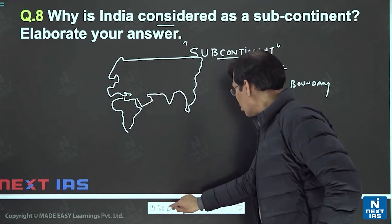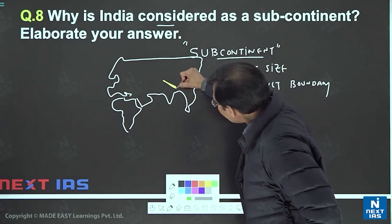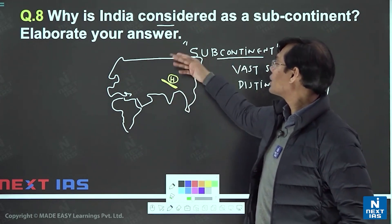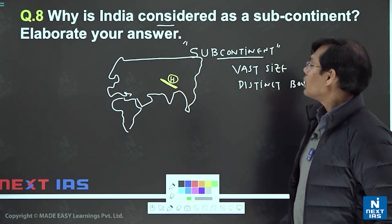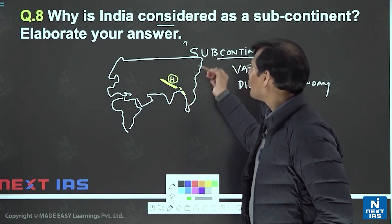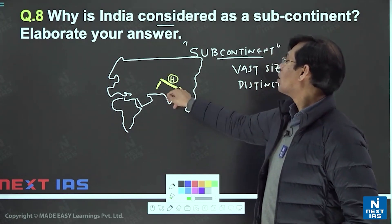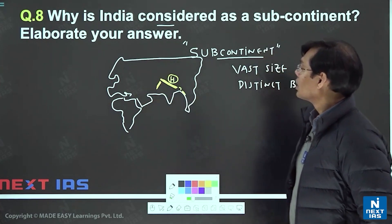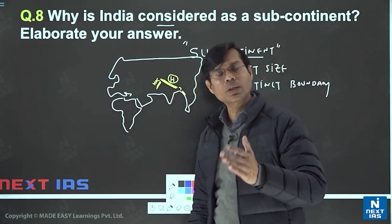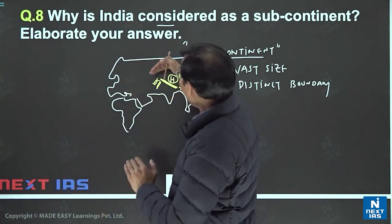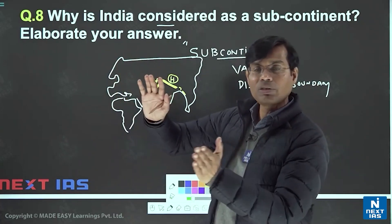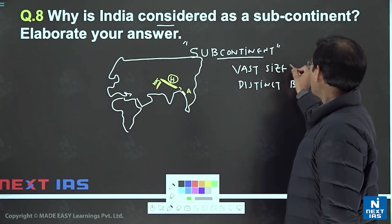On one side, we have the Himalaya — the highest mountain barrier in the world, incomparable as a natural barrier — separating India from China and Central Asia. The extension of the Himalaya continues, and to the west, the Hindu Kush separates this zone from Afghanistan and other parts of Asia. The HKH region — Hindu Kush, Himalaya, Karakoram — forms the northward natural barrier. To the east, the Arakan Yoma marks the boundary.